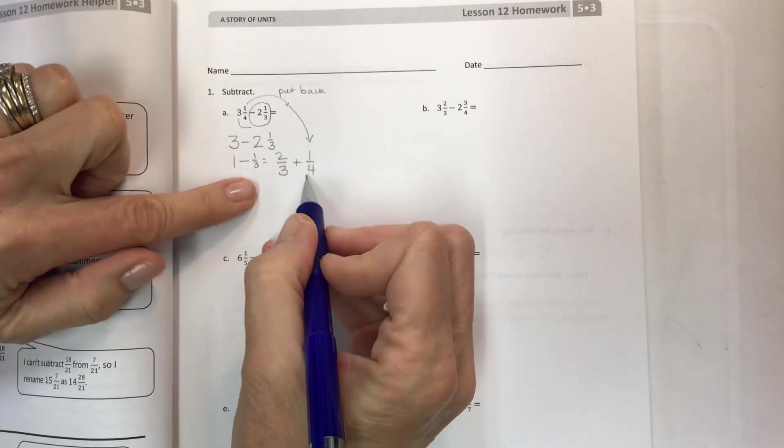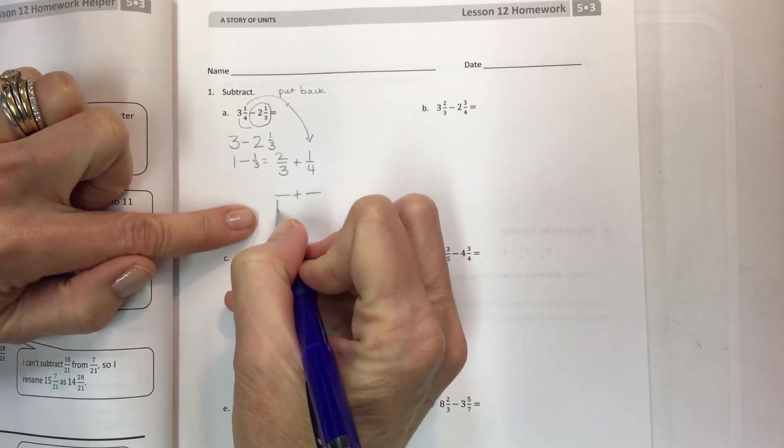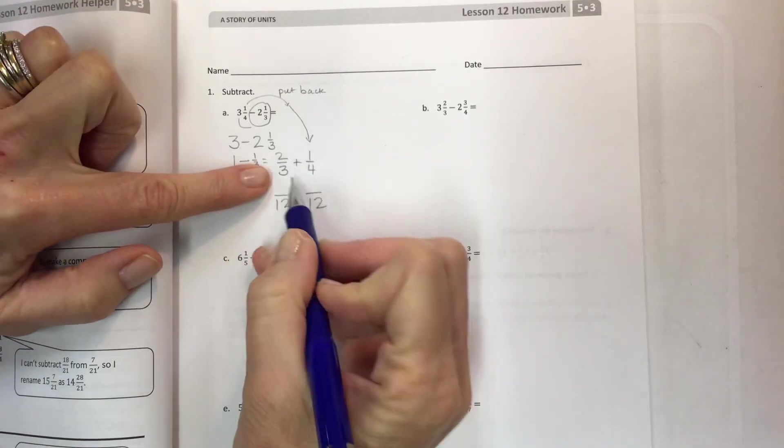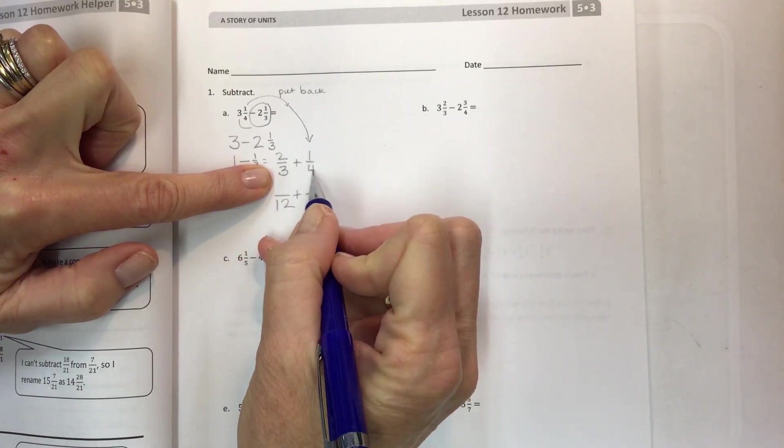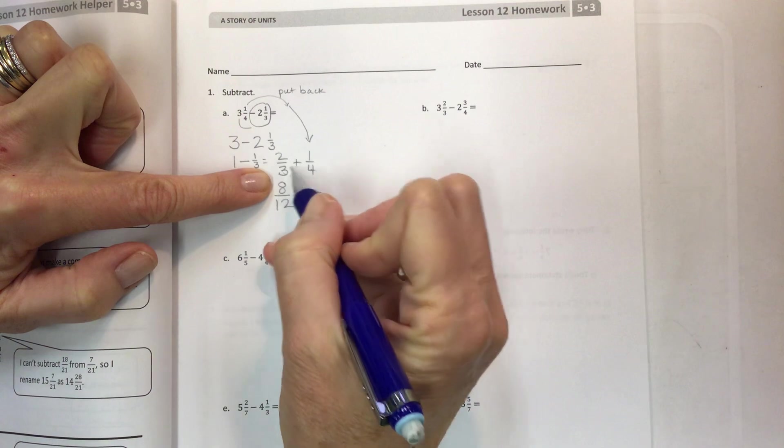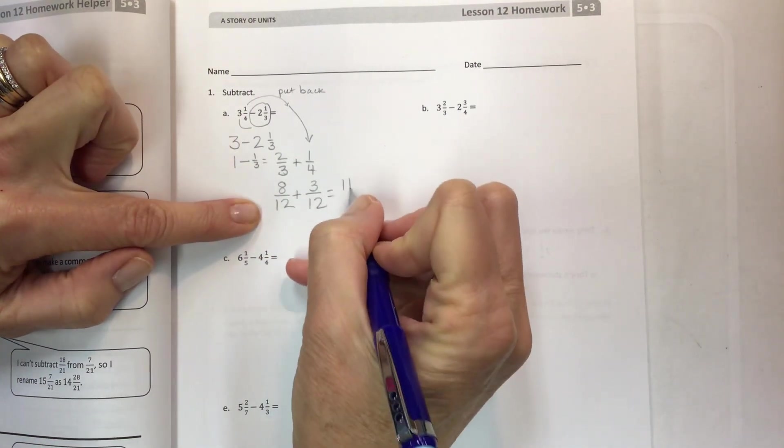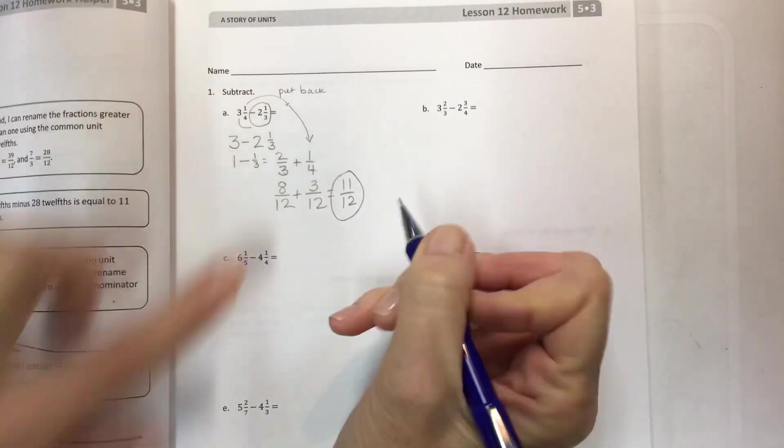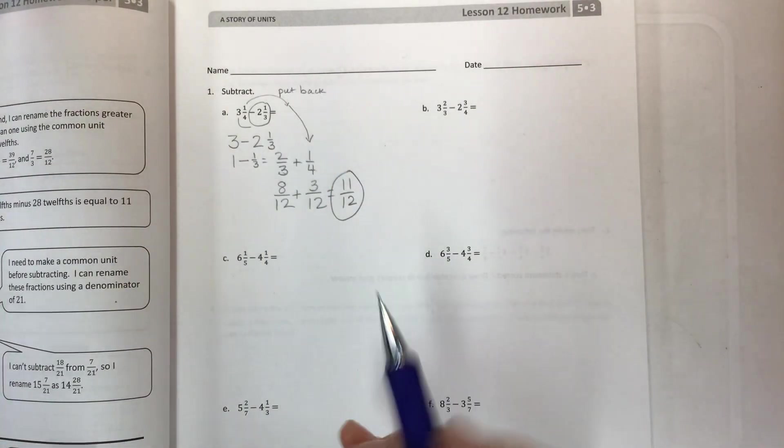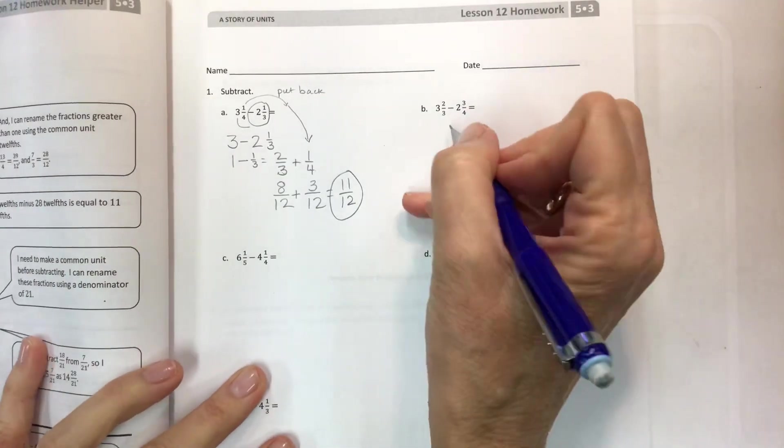Now we have a simple addition problem where we have to get a common denominator. Hopefully you know it's 12. You can get that by multiplying your denominators. Four is my scale factor for three, so four times two is eight. Three is my scale factor for four, so three times one is three. Eight plus three is eleven and you have your answer.